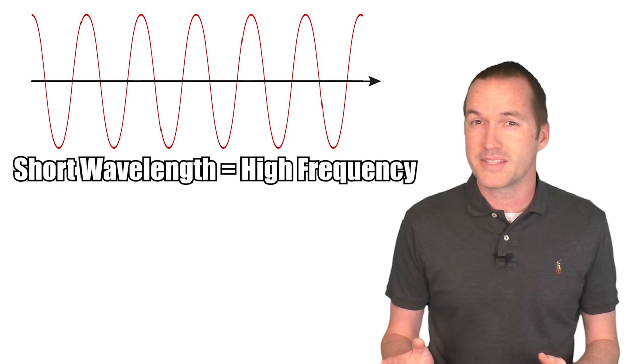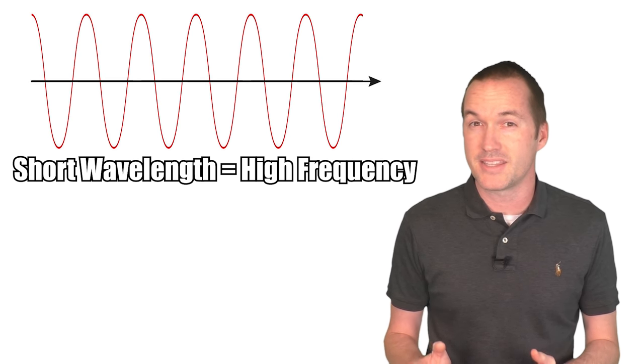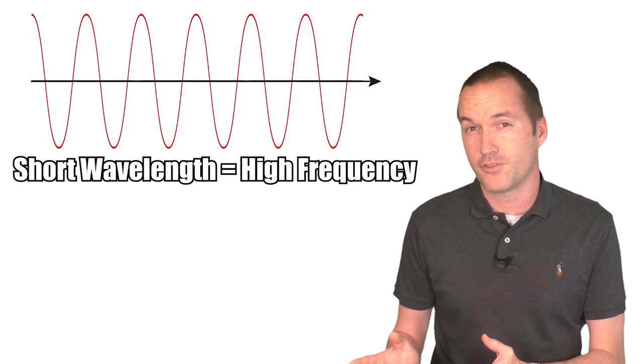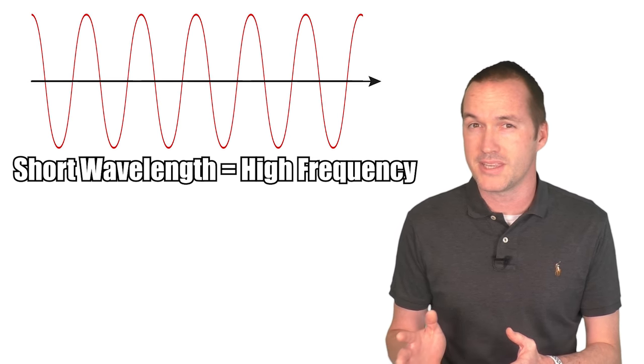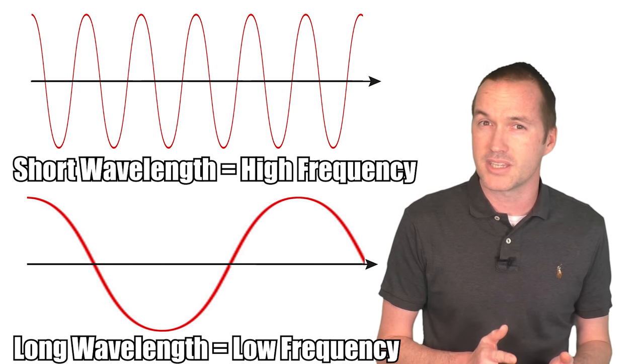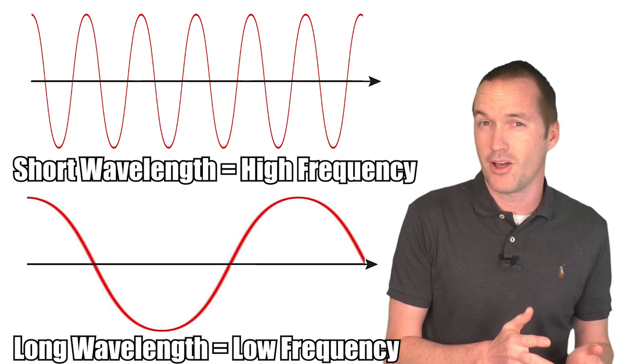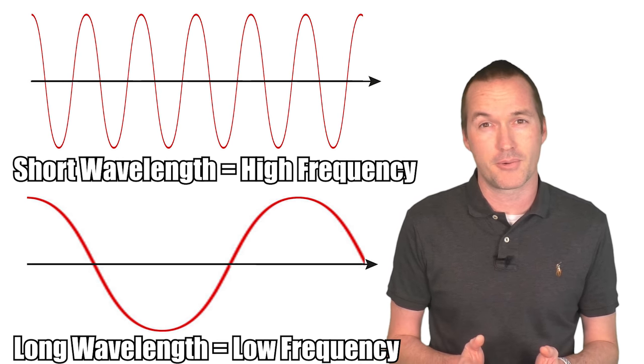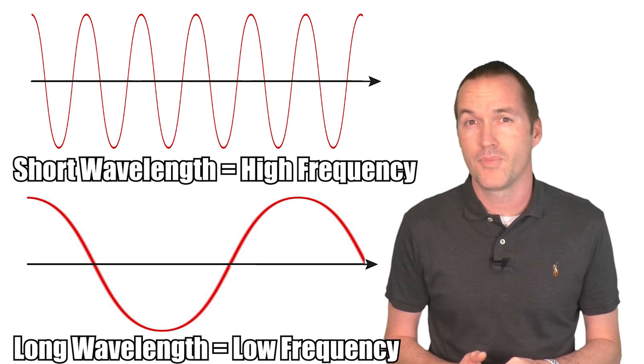Since the speed is constant at the speed of light, if the wavelength is short, the frequency needs to be high. Conversely, if the wavelength is long, the frequency is low.